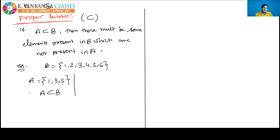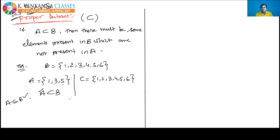Both A ⊆ B and A ⊂ B are correct here — similar to how '3 < 5' and '3 ≤ 5' are both correct. However, if C = {1,2,3,4,5,6} = B, then C ⊂ B (proper subset) is NOT correct because there are no extra elements in B — but C ⊆ B is correct.